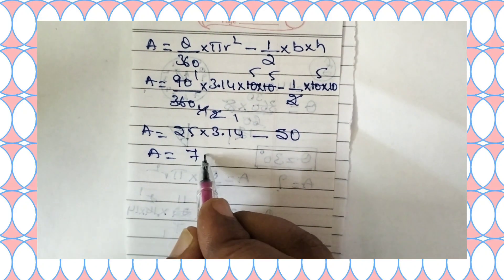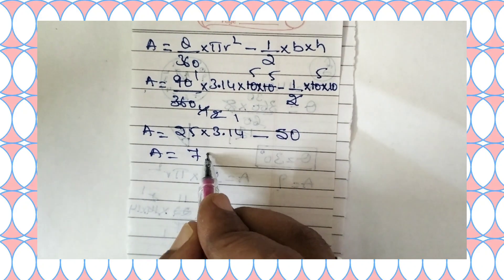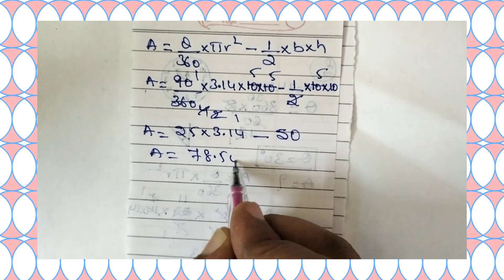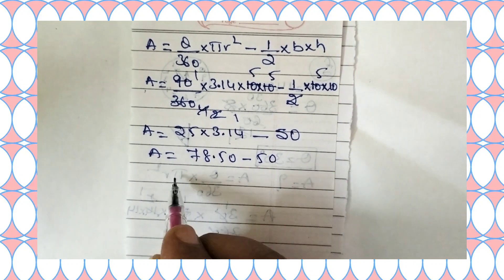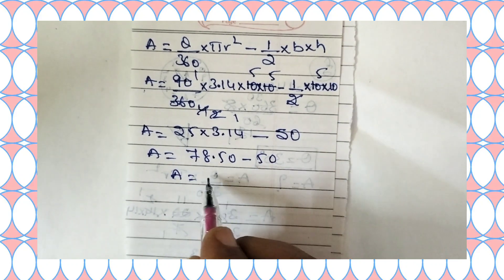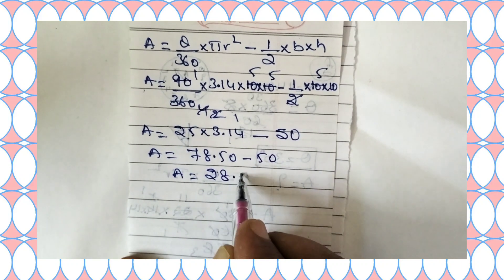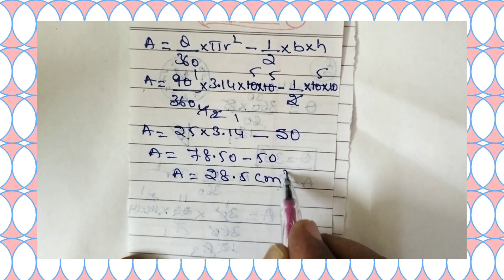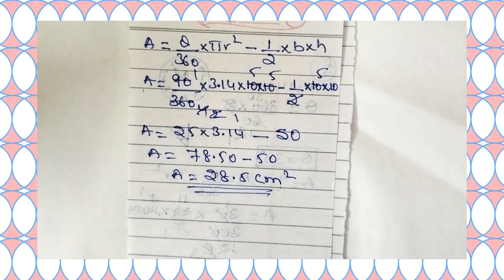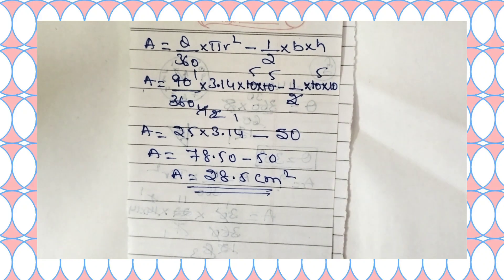78.50 minus 50 equals 28.5 centimeter square. So the area of the minor segment is 28.5 centimeter square.